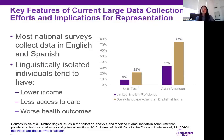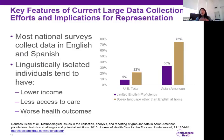Another key feature of most national surveys is that they usually only collect data in English and Spanish. This is particularly problematic for the Asian American population because 33% of the Asian American population — compared to 9% of the total U.S. population — have limited English proficiency, and 75% of Asian Americans versus 22% of the U.S. total speak a language other than English at home. Moreover, these linguistically isolated individuals tend to have lower income, less access to care, and worse health outcomes. Since these individuals are systematically not being included in large data collection efforts, our current understanding of health disparities are likely an underestimate of the health needs of Asian Americans.